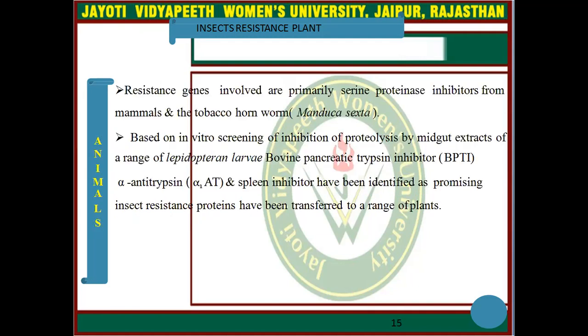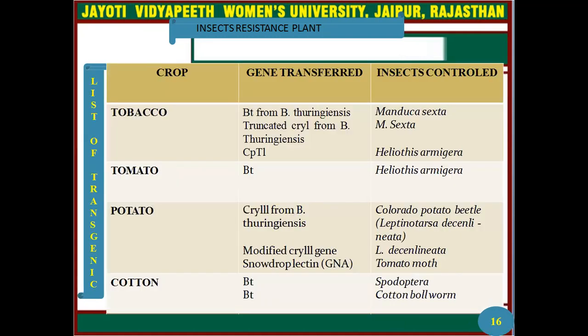The genes involved are primarily serine proteinase inhibitors from animals, including those from tobacco and corn. Based on in vitro screening of inhibition of total proteolysis by midgut extracts of a range of lepidopteran larvae, alpha-antitrypsin and other screen inhibitors have been identified as promising insect resistance proteins and have been transferred to a range of plants.